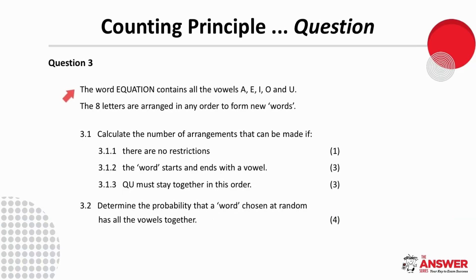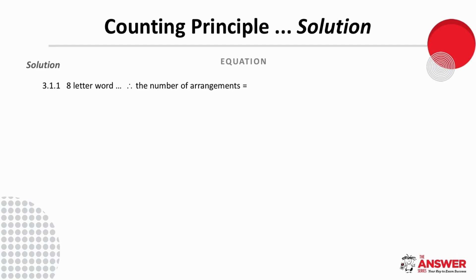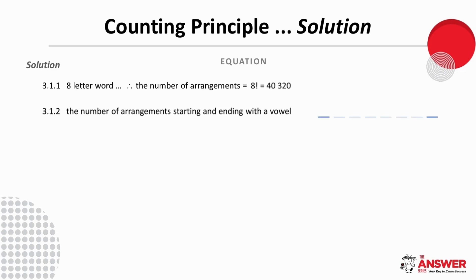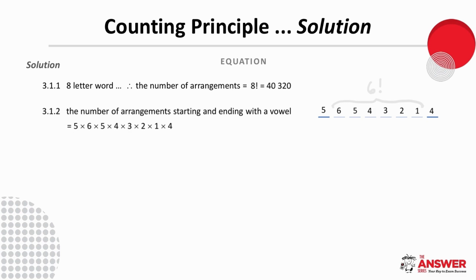Question 3 is about the letters of the word 'equation'. The total number of arrangements without restrictions is 8 factorial, which is 40,320. To find arrangements starting and ending with a vowel, place 8 slots. There are 5 vowels altogether, so the first slot has 5 options and the last slot has 4 options. The remaining slots have 6, 5, 4, 3, 2, and 1 options respectively. The number of such arrangements is 5 times 6 times 5 times 4 times 3 times 2 times 1 times 4, which equals 14,400.